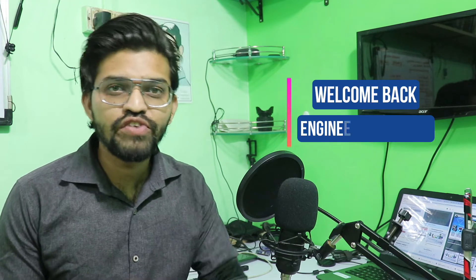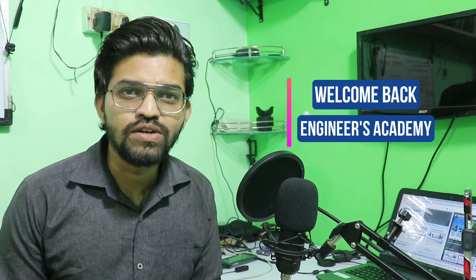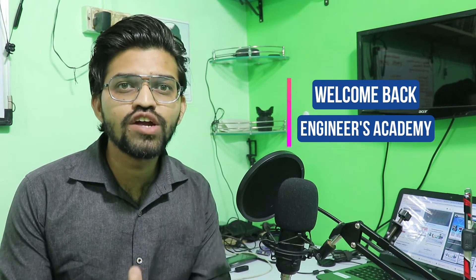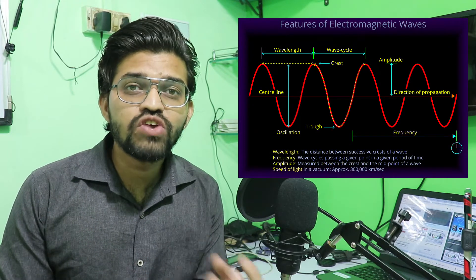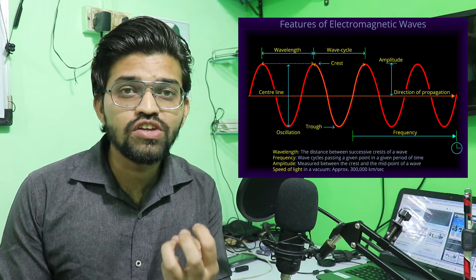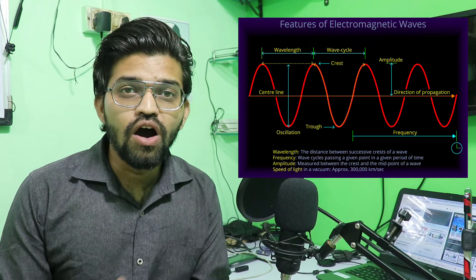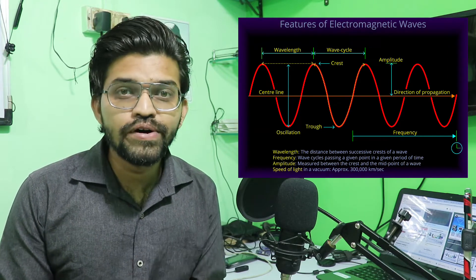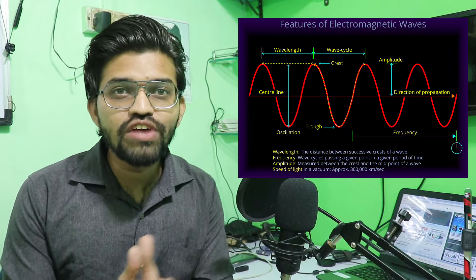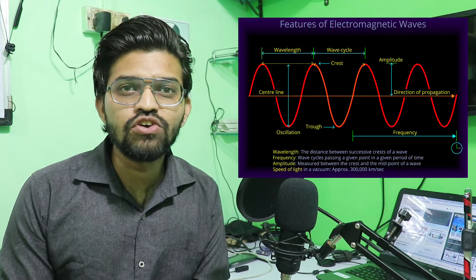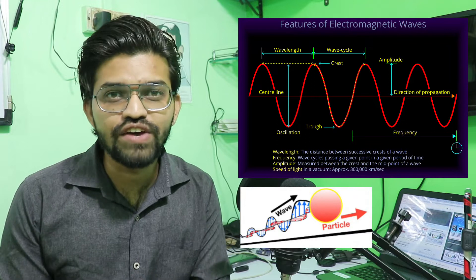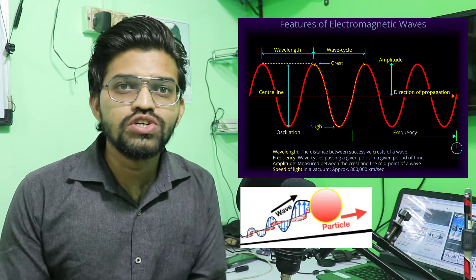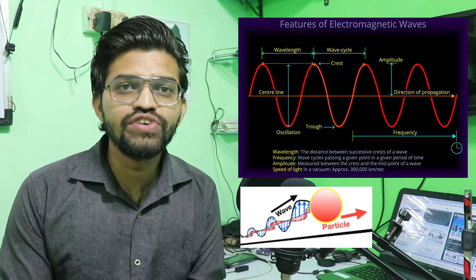Hi friends, welcome back to another video of Janus Academy. In our previous video we learned about the electromagnetic wave and its different features: frequency, wavelength, amplitude, wave number, the energy of the electromagnetic wave, and intensity of the photon. All these topics were covered in our previous video.